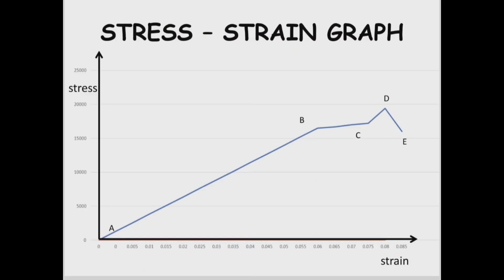The force applied on the bridge equals 1764 Newtons. Stress is dependent on strain and is defined as force per unit area. The above-shown graph was made using actual values from our experiment. In the graph, from point A to B, stress is directly proportional to strain.